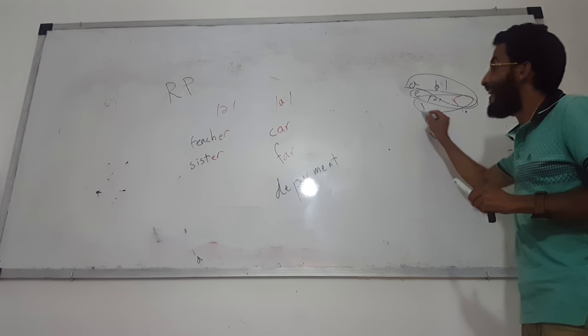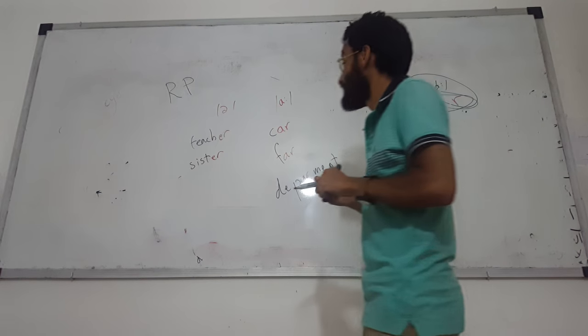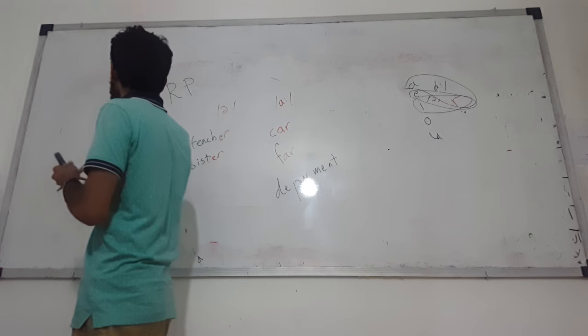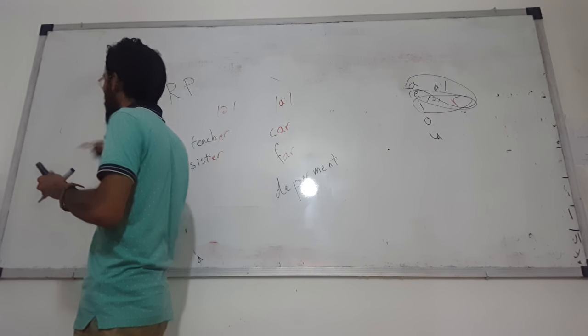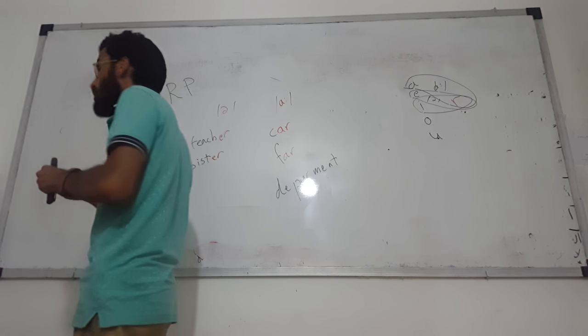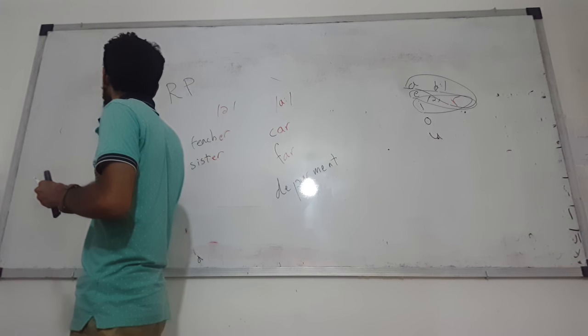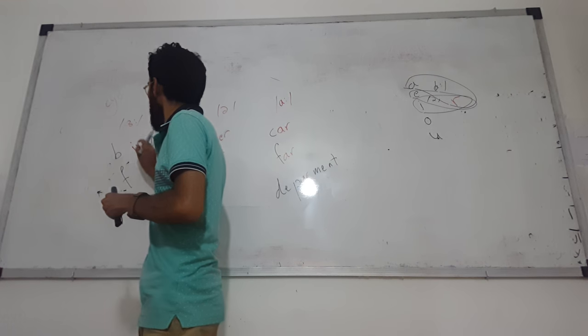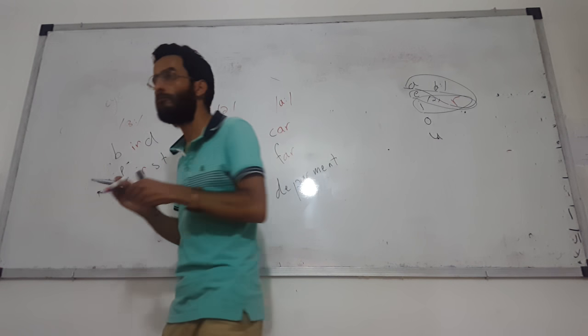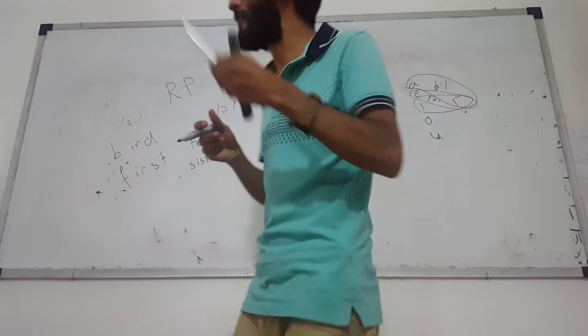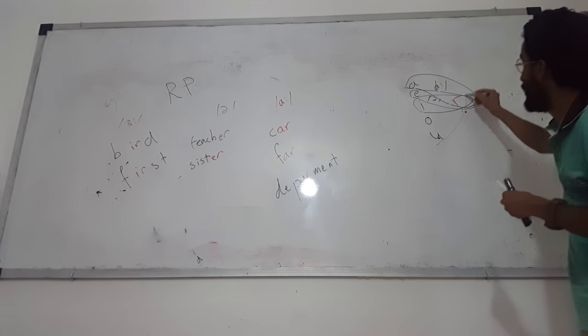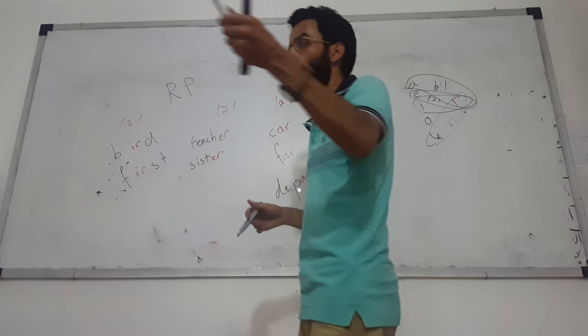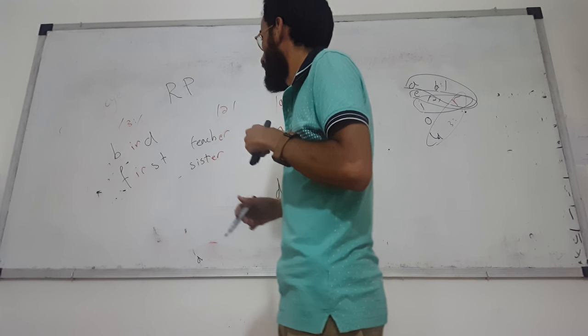I-R makes words like 'bird', 'first', 'third'. U-R has a sound like in 'Turkey', you know?